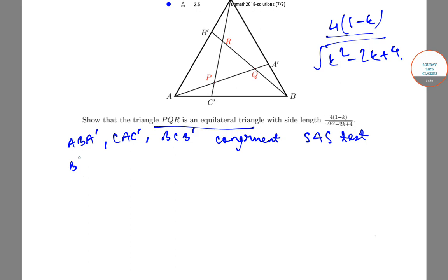So the triangles BA'Q, CB'R, and AC'P are also congruent.